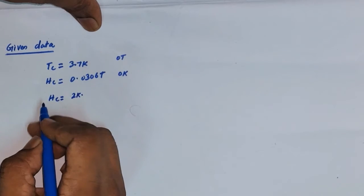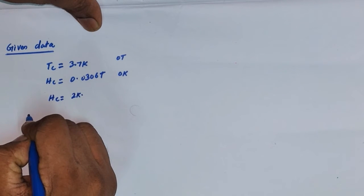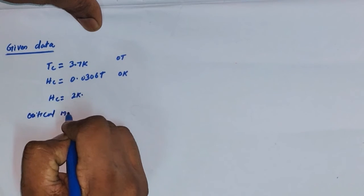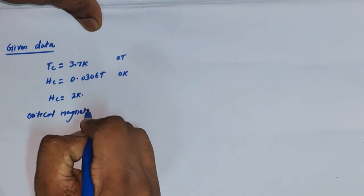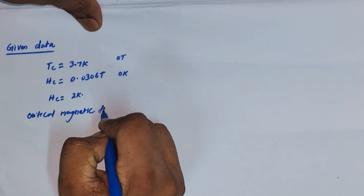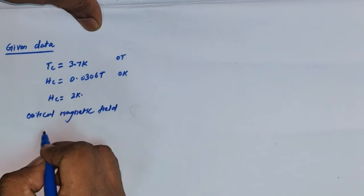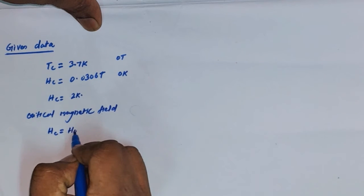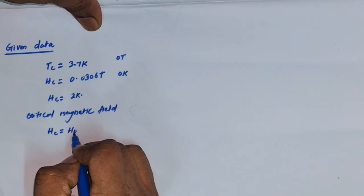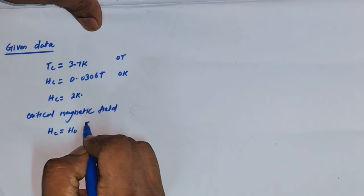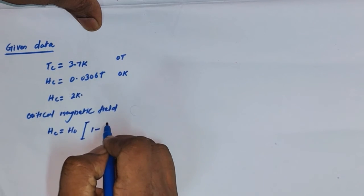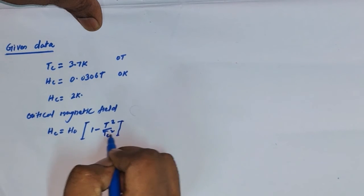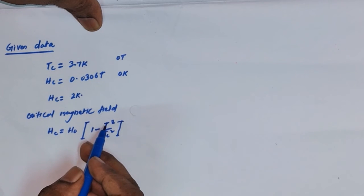We know the expression for the critical magnetic field for a superconductor. It is given by H_c(T) = H_c(0) × [1 − T²/Tc²]. This is the critical magnetic field expression at any finite temperature.